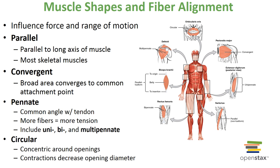An example of unipennate is the extensor digitorum longus. Bipennate muscles have fascicles that insert into the tendon from opposite sides, so the muscle's grain resembles a feather — an example is the rectus femoris. Multipennate muscles have an arrangement that looks like many feathers situated side by side; an example is the deltoid.